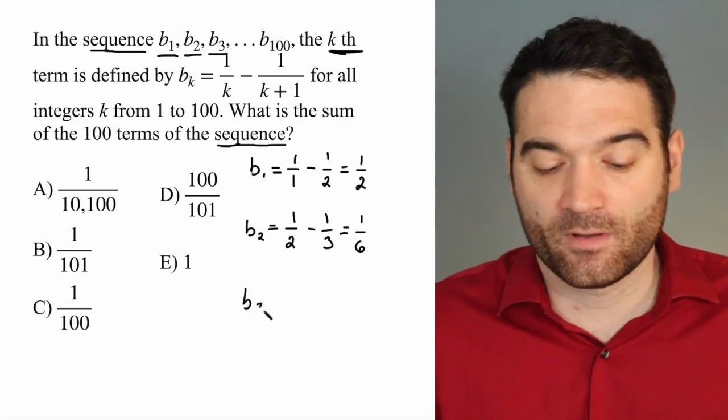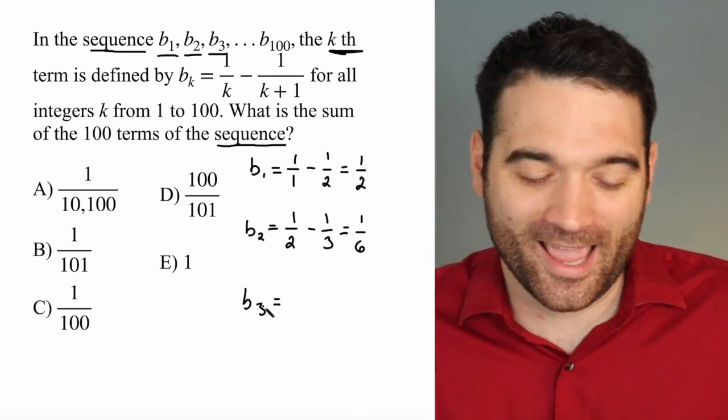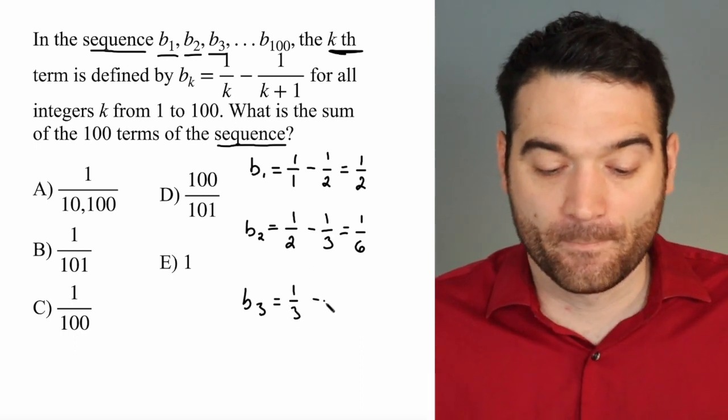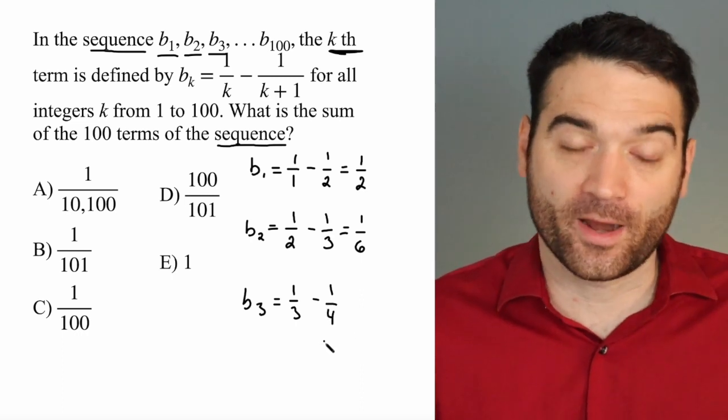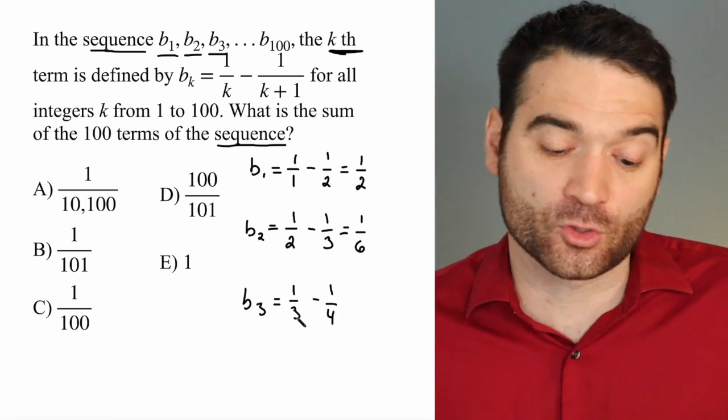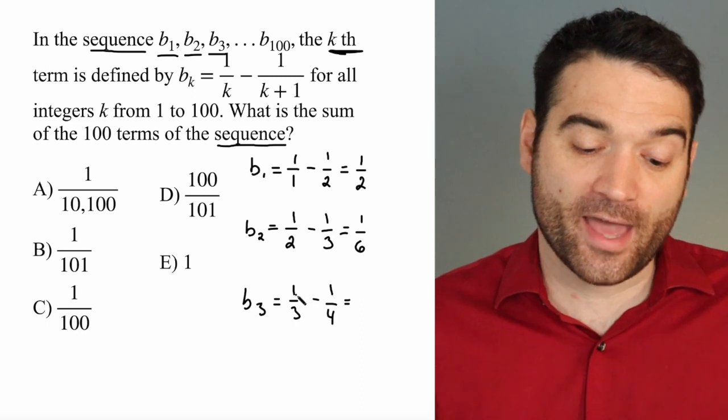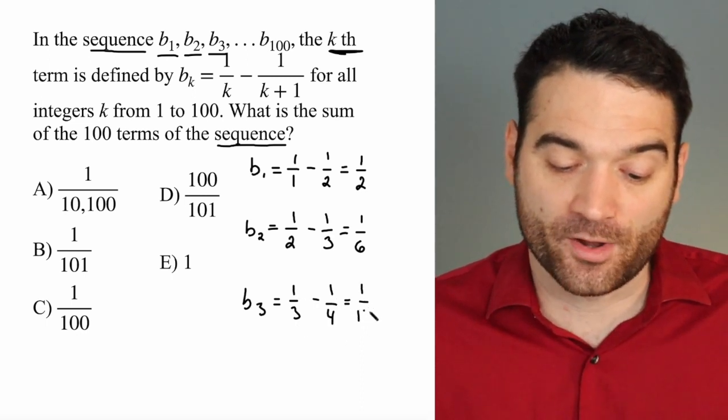And then I'll find the third term, and then we'll check in for a little shortcut. And I find that the third term, when k is 3, is 1 over 3 minus 1 over 3 plus 1, or 4. And again, I'll use my fractions here. This is 4 over 12, and this is 3 over 12. And so that is 4 over 12 minus 3 over 12, also known as 1 over 12.